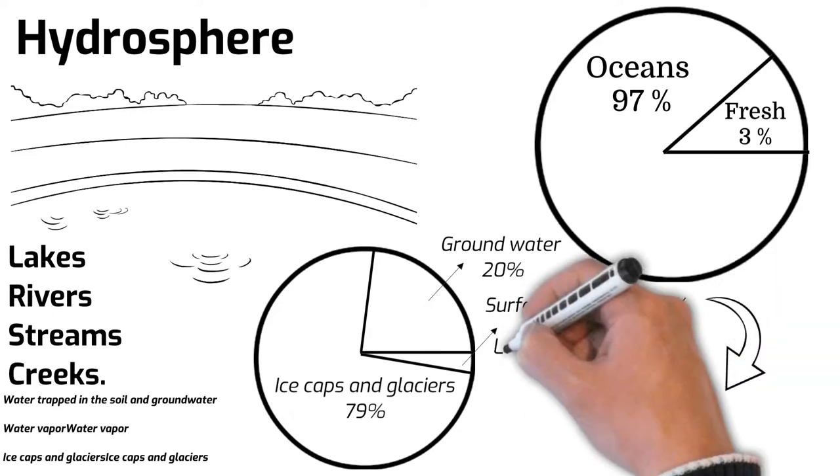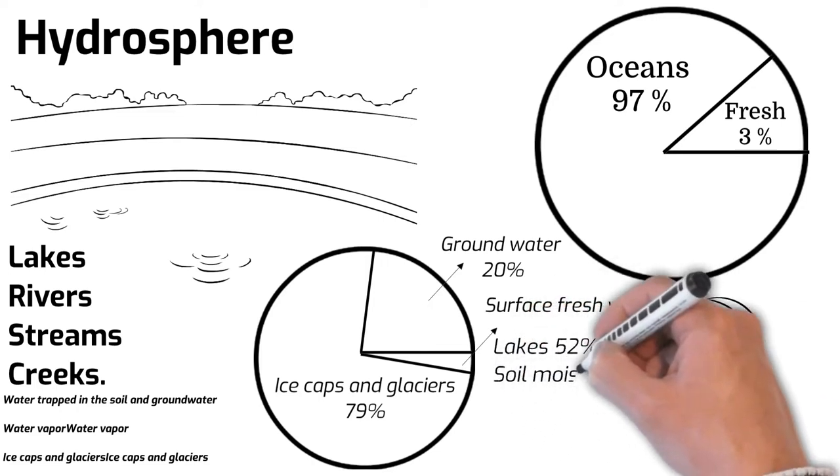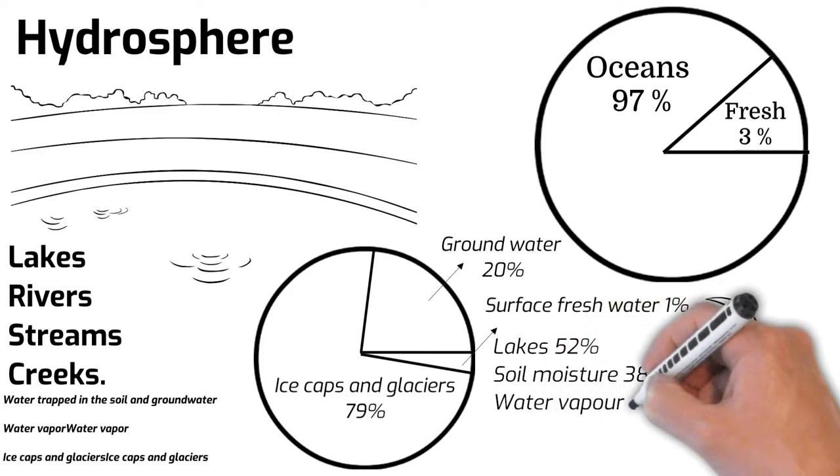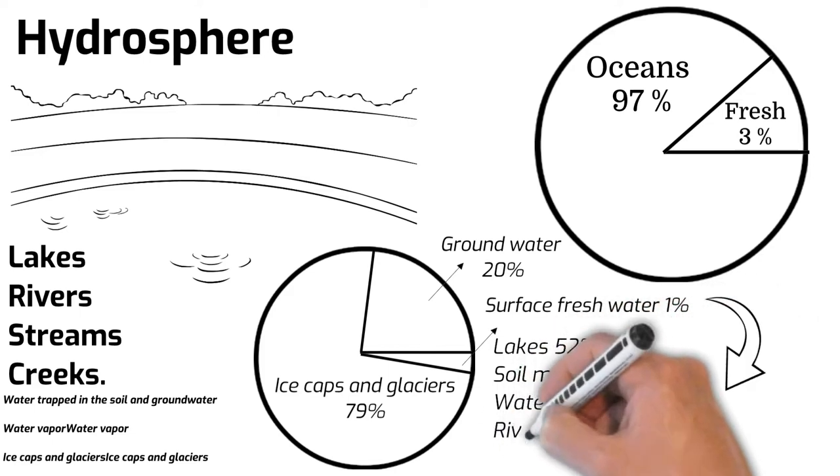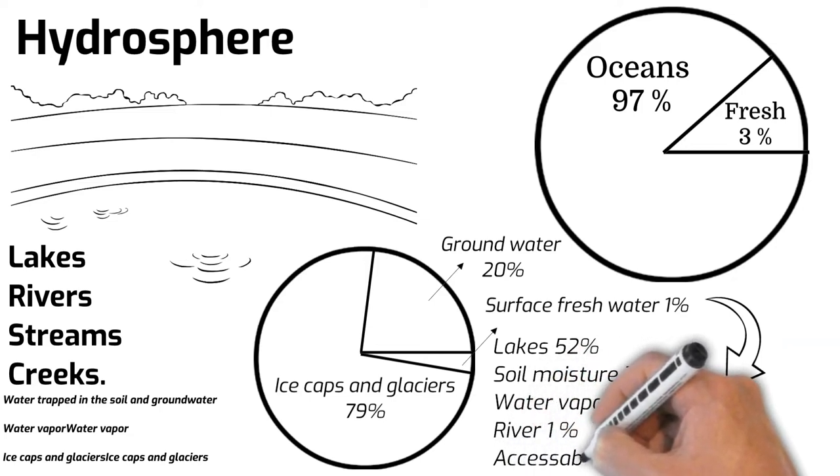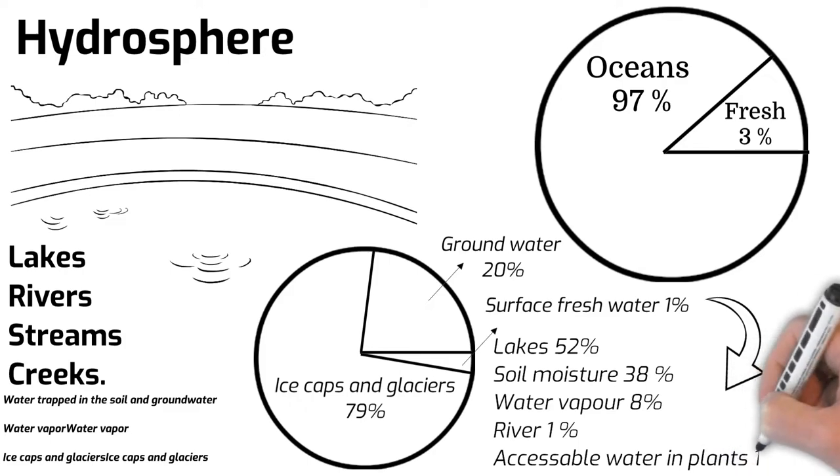Then if we further see the distribution of that 1%, so 52% water is in the lakes, 38% is soil moisture, 8% is atmospheric water vapor and 1% is in the rivers. And the last 1% is accessible water in plants. So from here you can guess how much water is easily available for human beings to use.